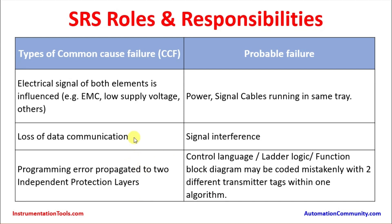Loss of data communication due to electrical power disturbance may result in signal interference and disturbed readings. Programming errors propagated to two independent protection layers represent another type of common cause failure. For example, if an application program has an error — such as logic meant for control of a particular level being erroneously entered into the safety instrumented system — it may impact safety. Control language such as ladder logic or function block diagrams may be coded mistakenly with two different transmitter tags within one algorithm, or a measurement transmitter tag may be wrongly entered into the SIS, leading to wrong readings and possible equipment shutdown.